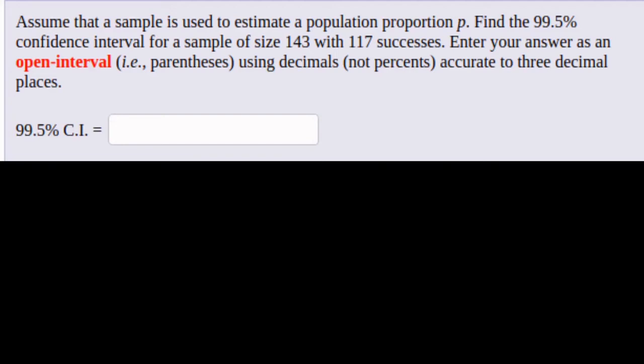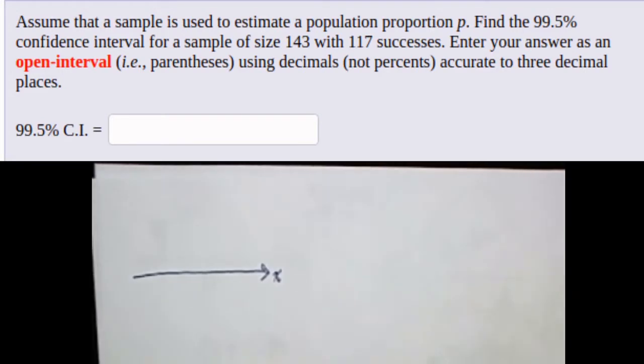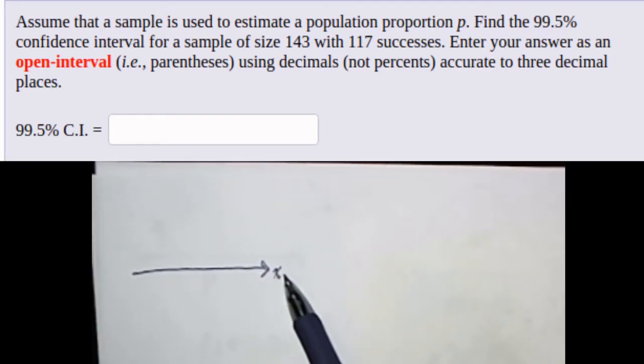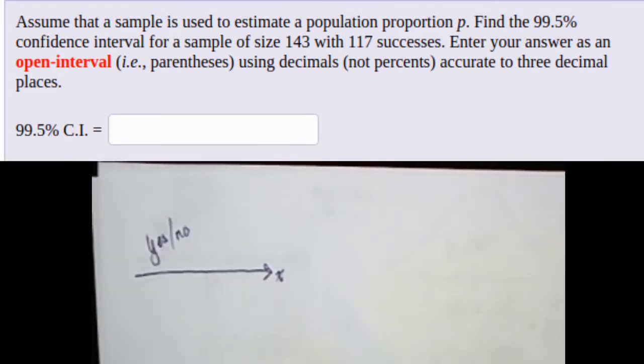In this problem we need to find a confidence interval. The original population in this example has a random variable that's a categorical variable, and we're interested in each of the individuals in the population of whether yes they're in the category or no they're not.